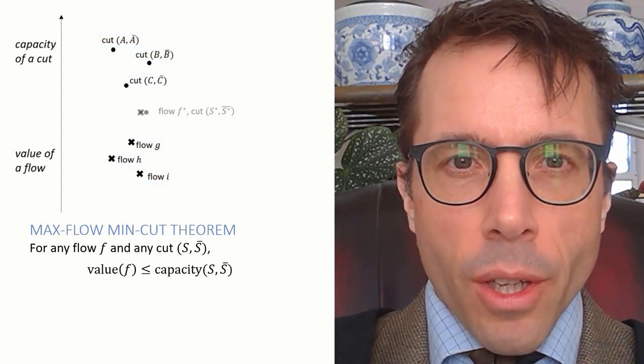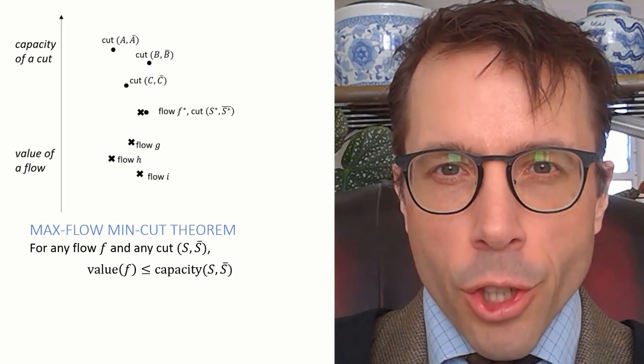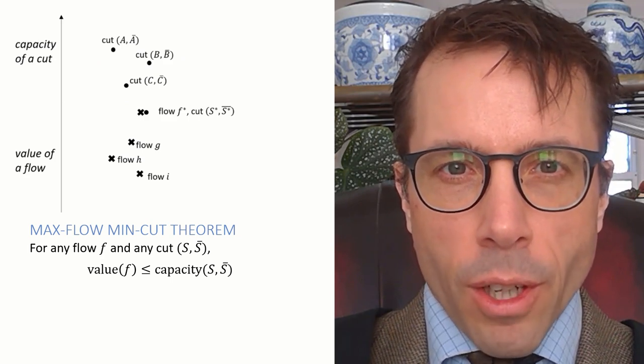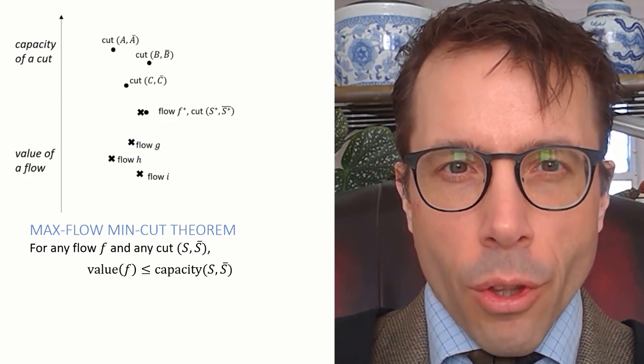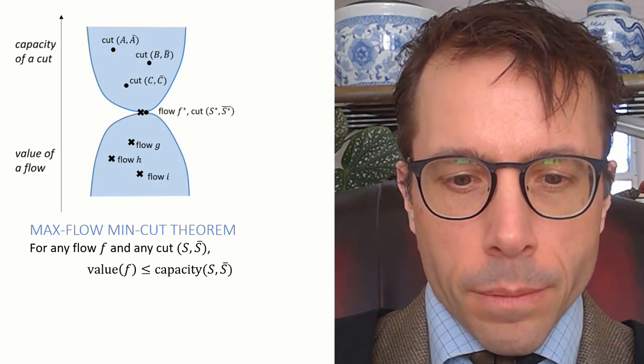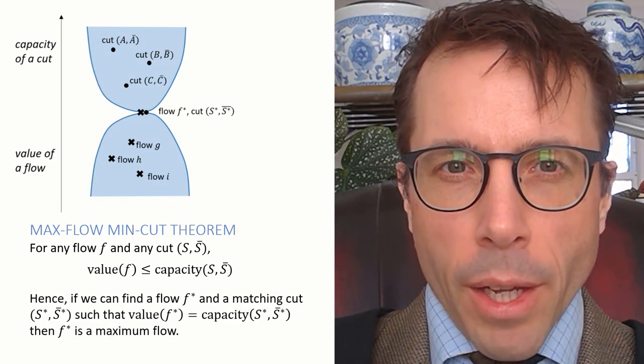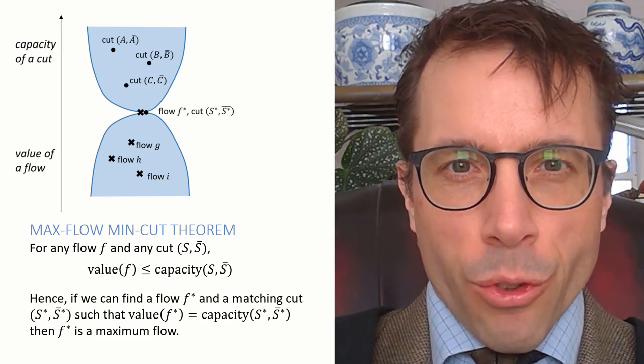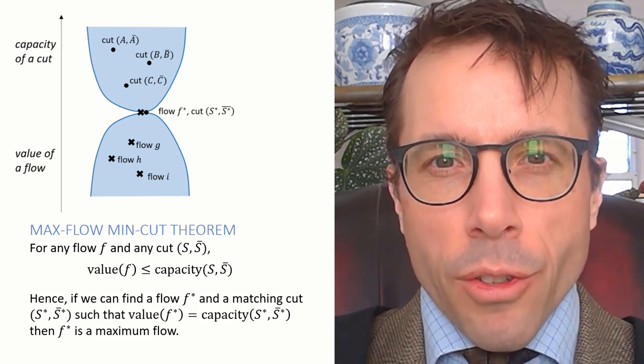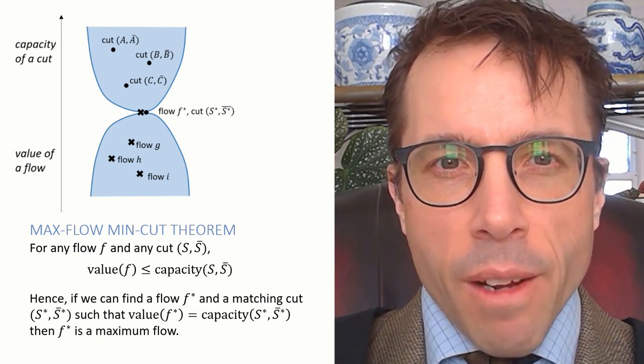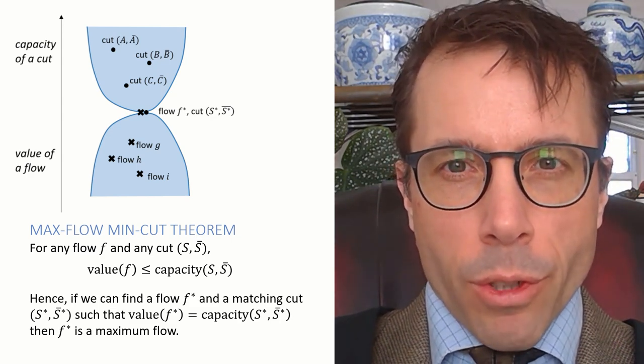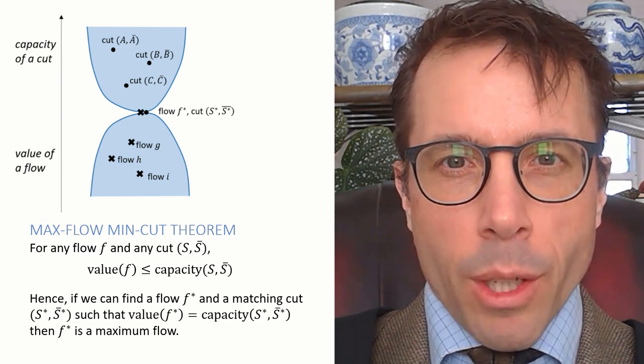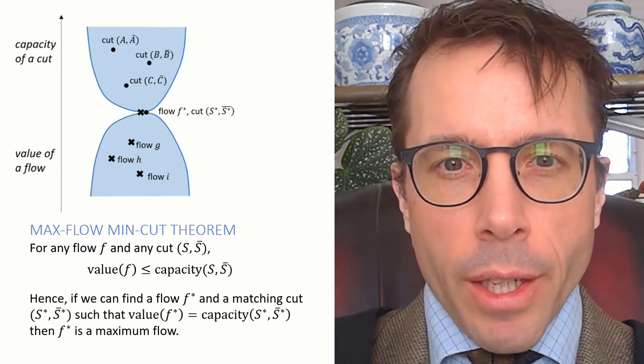Now, what if I could find a flow, call it f-star, and a matching cut, call it S-star, where the value of f-star is equal to the capacity of S-star? That would tell us that the two envelopes touch, and therefore that f-star must be a maximum flow. There can't possibly be any flow with a higher flow value because that would stray into the cut capacity envelope. Or, to say the same thing more formally, the theorem implies that every possible flow value is less than or equal to the capacity of the S-star cut that we found. Therefore, every possible flow value is less than or equal to the value of f-star. Therefore, f-star is a maximum flow.